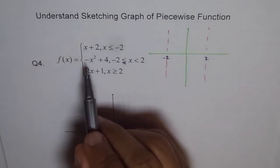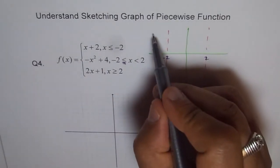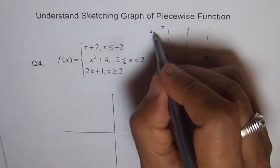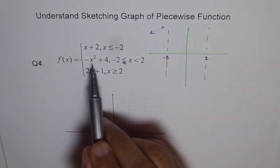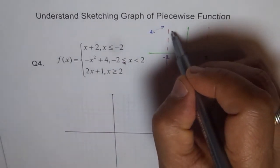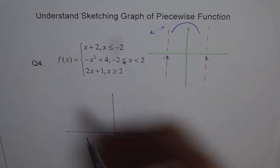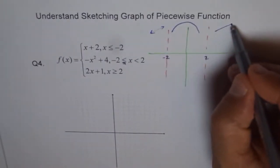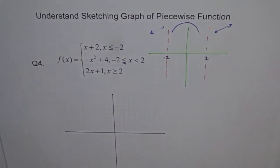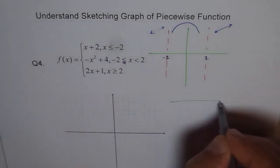In the region less than minus two, we have a line with a positive slope. Minus x squared gives a downward-opening parabola in the middle region. Then on the right side we again have a line with a positive slope. That gives you a rough sketch of how the function should look, but exact values can only come from a table of values.